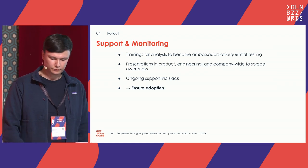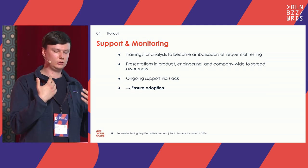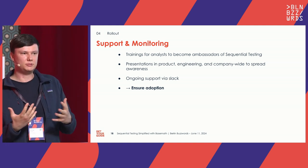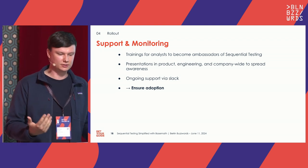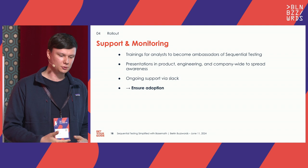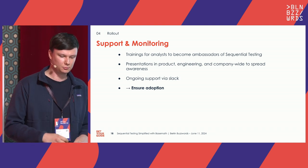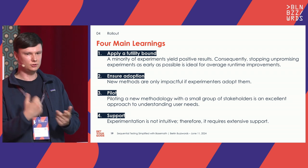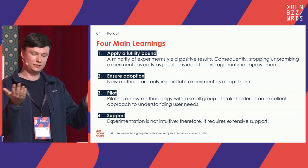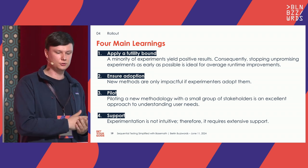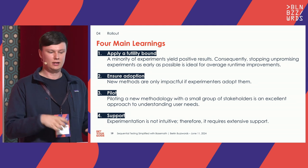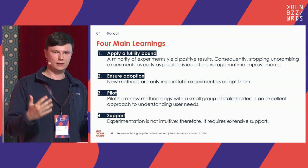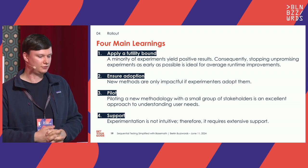Finally, if you implement cool new methods that can reduce experiment runtime, it only helps if people actually use them. Adoption is a huge topic — it's really important to hand-hold people, give them channels to reach out, and support them in learning the new method. Summarizing: first, apply a futility boundary since most experiments are unsuccessful — try to end them as quickly as possible. Second, ensure adoption. Third, the pilot is really helpful to understand the needs and challenges of your experimenters. Fourth, offer ongoing support.